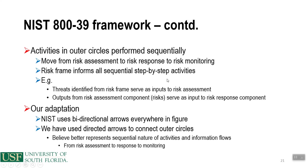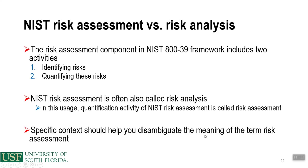The risk frame informs sequential step-by-step activities. The threats identified from the risk frame serve as input to the risk assessment. The outputs from the risk assessment component — i.e., the risks — serve as input to the risk response component. NIST uses bidirectional arrows in the figure; we use directed arrows to connect the outer circles, which better represents the sequential nature of activities and information flows. The risk assessment component in the NIST 839 framework includes two activities: identifying risks and quantifying them. NIST risk assessment is also called risk analysis.